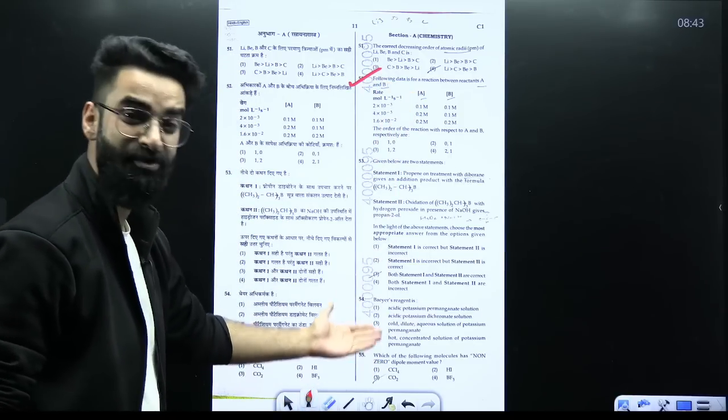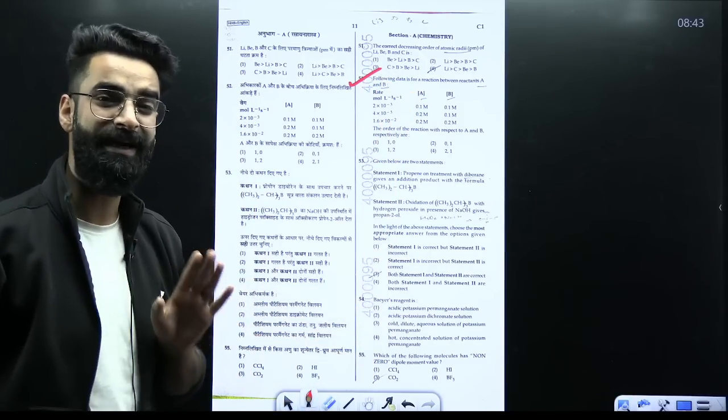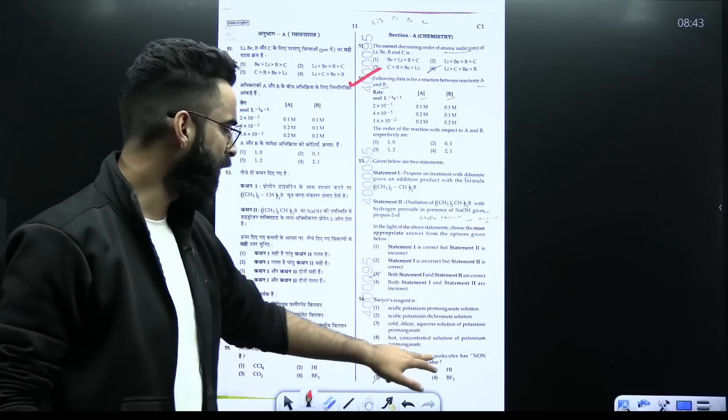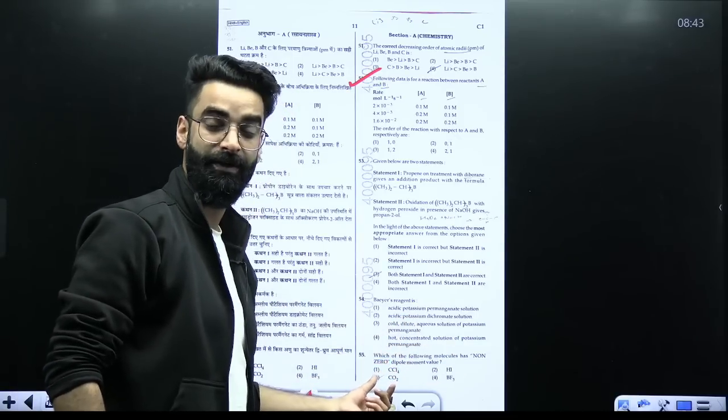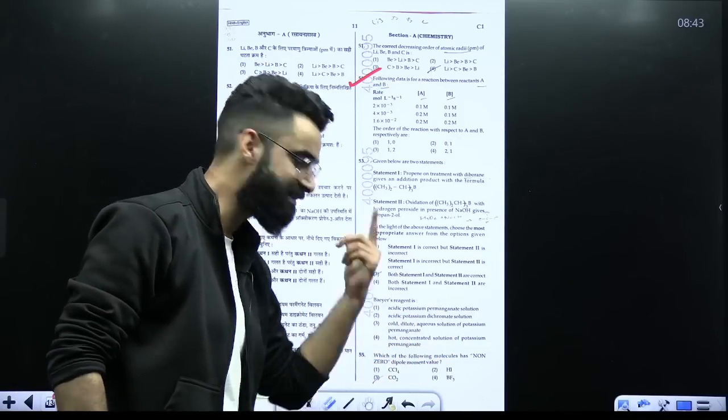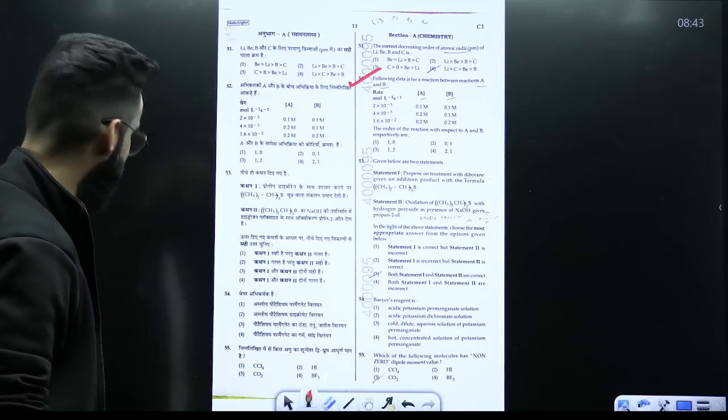Look at this particular question guys, I am showing you the easy kill questions which does not need any calculation. Which of the following molecules has non-zero dipole moment? Non-zero. Options were CCl4, HI, carbon dioxide, BF3. So again one basic question this is.